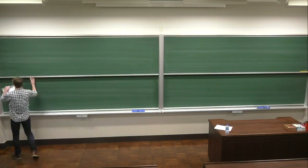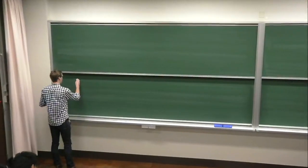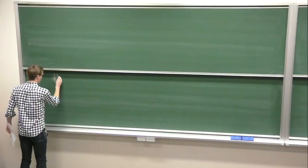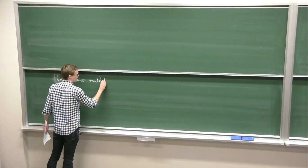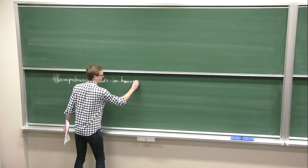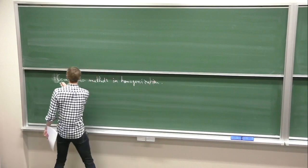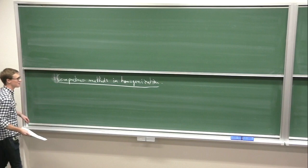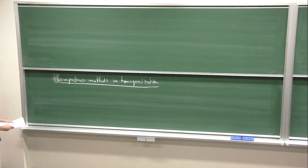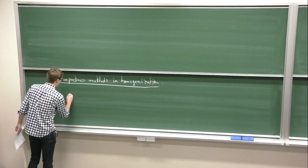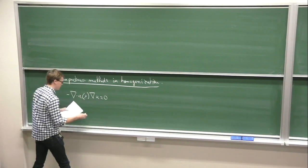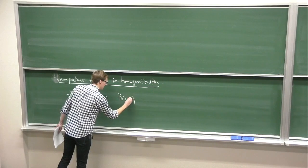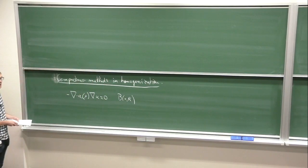Let me introduce the subject of the first lectures: compactness methods in homogenization. This morning will be based on the simple elliptic equation in divergence form, linear, posed in a domain — let's say B(0,R) — and I will be interested in a regularity theory for this equation. Regularity theory is the study of the local behavior of solutions.